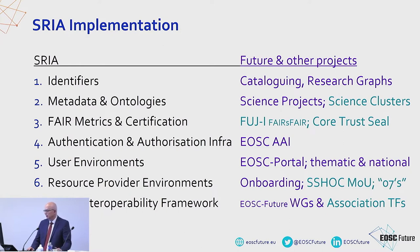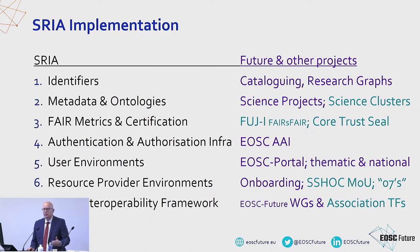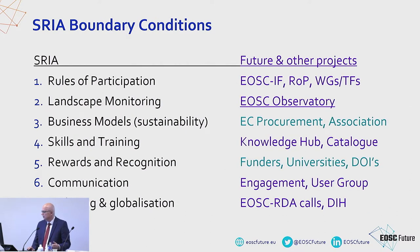For example, on identifiers, we use these for cataloging using the OpenAIRE research graph. We have metadata, and authentication is a big issue — so that when a user logs in to EOSC, they can access other infrastructures as well without needing to log in over and over again. The same goes for the boundary conditions: rules of participation are connected to the interoperability framework, and there are also working groups in the EOSC Executive Board and task forces of the EOSC Association.